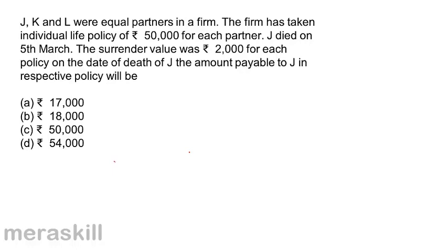What would J be entitled to on death? Mind you, this is entirely the policy of the partnership firm. So all partners share in the surrender value of the policy amount as per their profit sharing ratio. What happens on the death of the person? J's individual policy matures, so 50,000 is received by the firm and J will get his share in this.